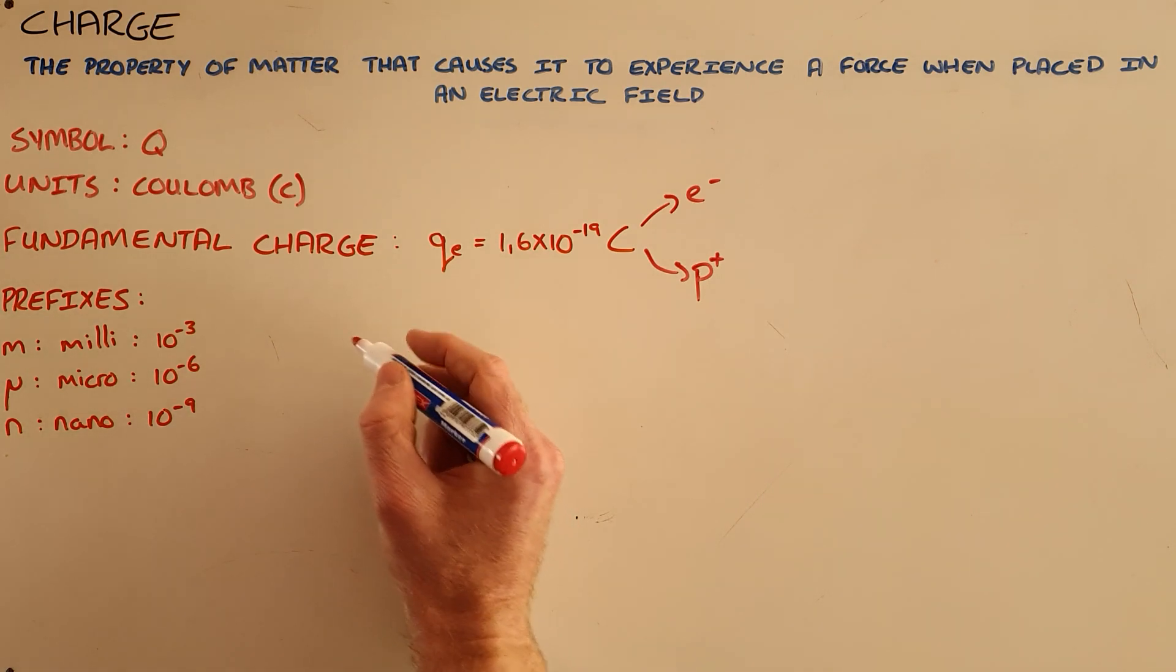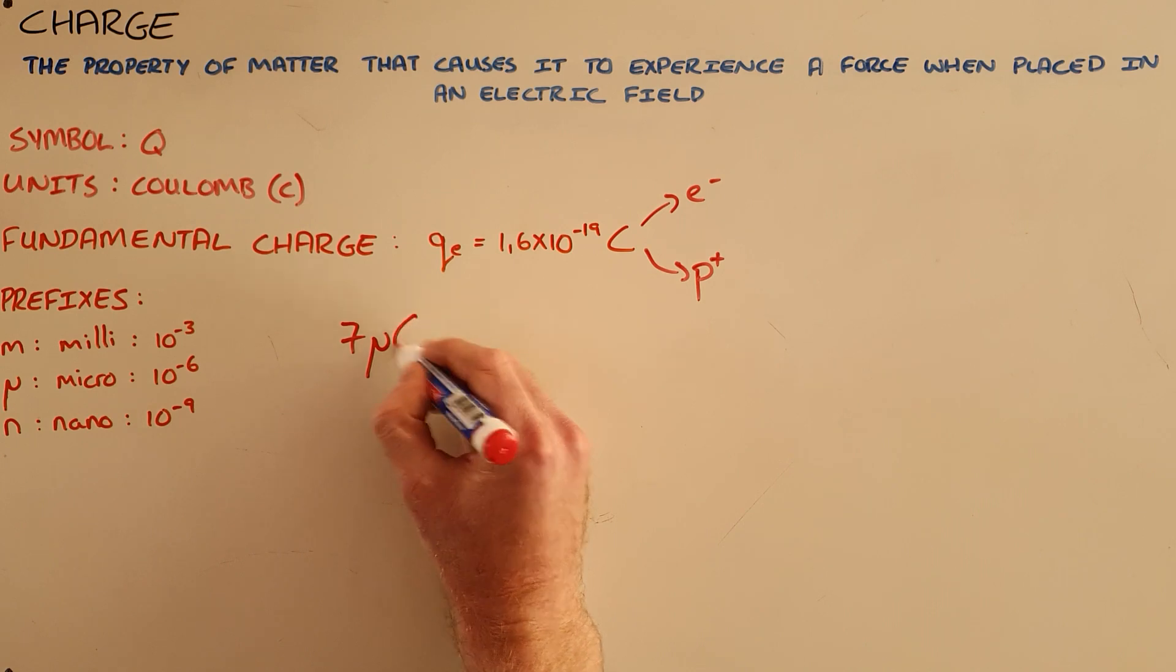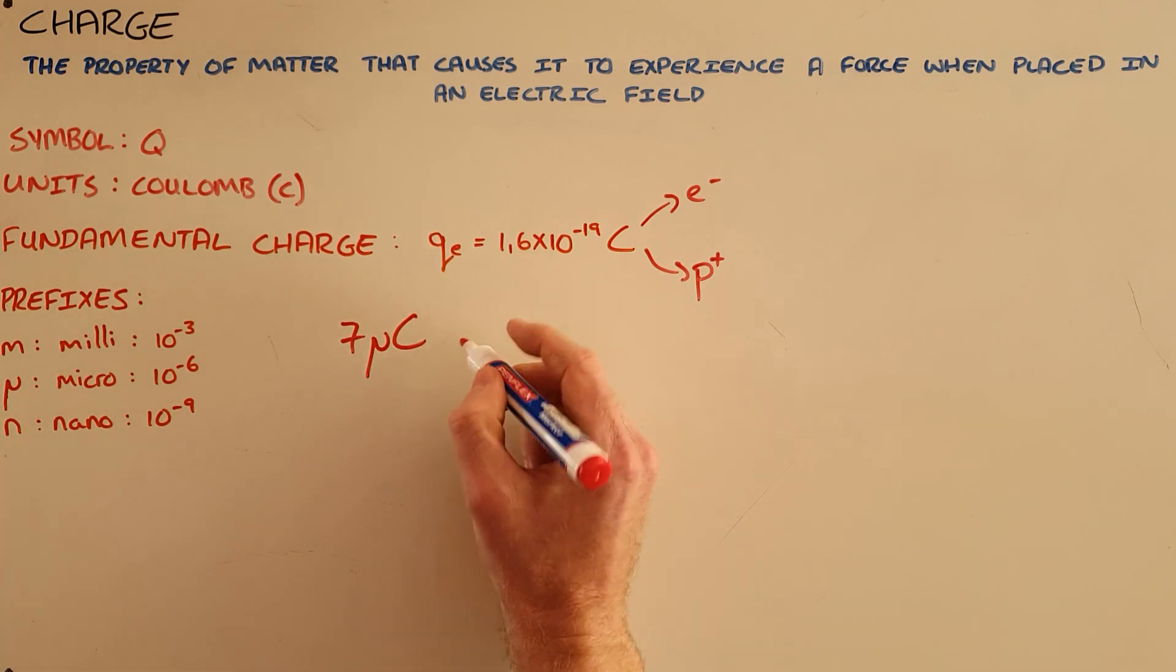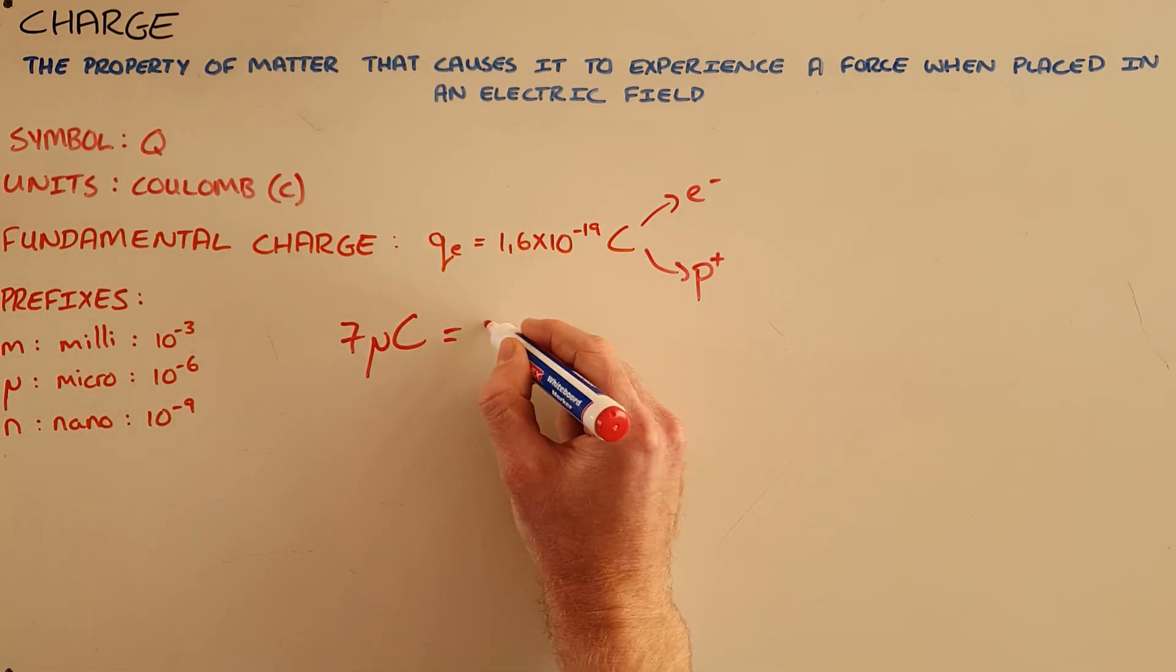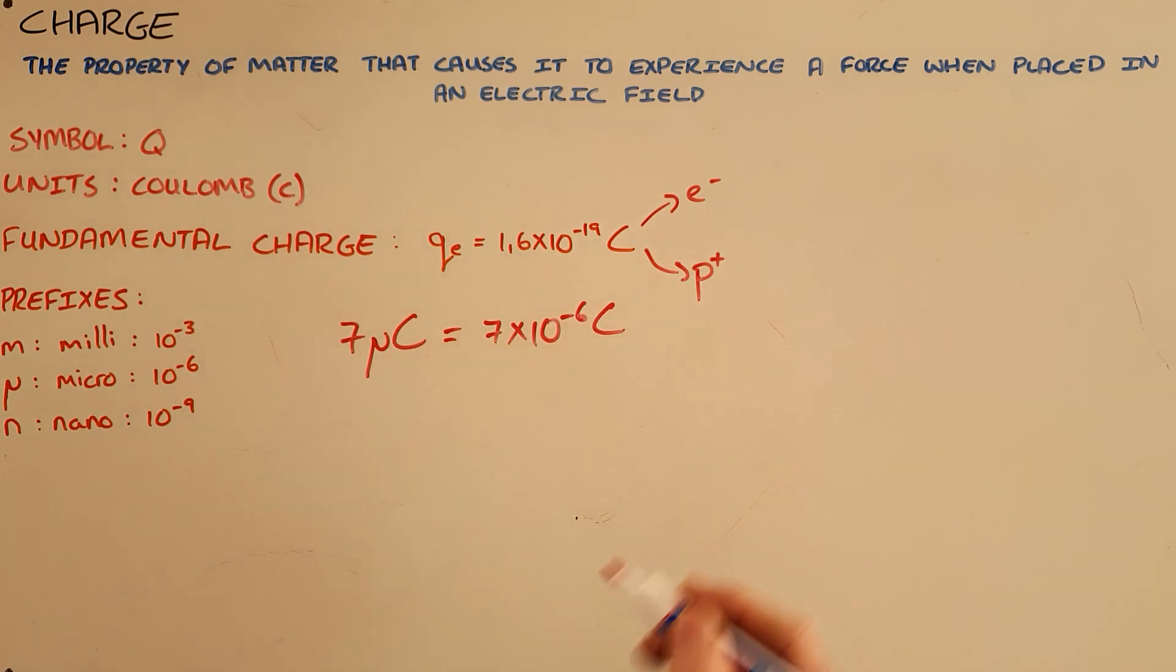So when we are referring to a number, for example 7 micro coulombs, that basically just means that it can be rewritten as 7 times 10 to the power of minus 6 coulombs. The reason for that is because a coulomb of charge is such a big quantity we often have to use these prefixes when talking about charges in everyday life.